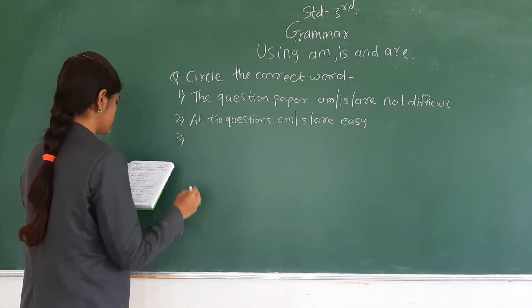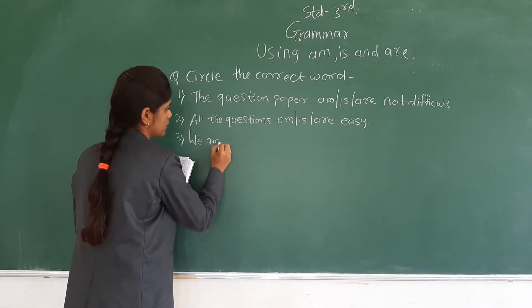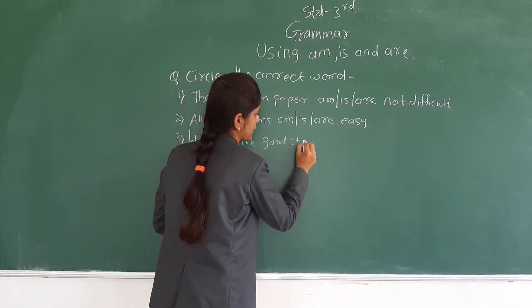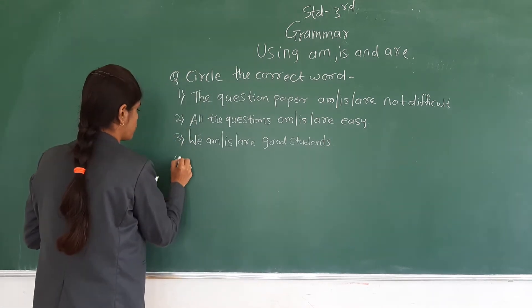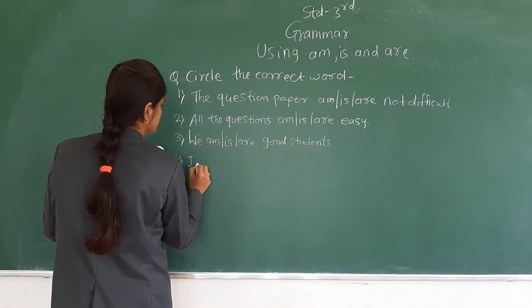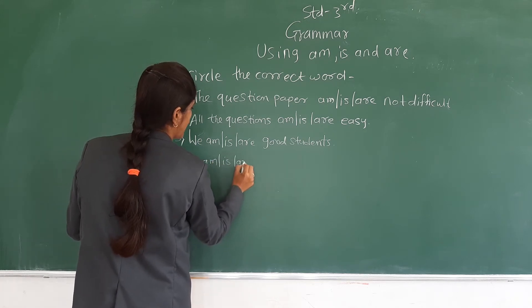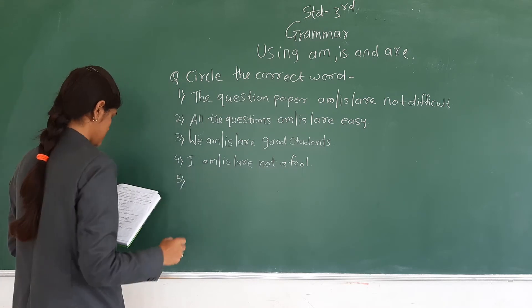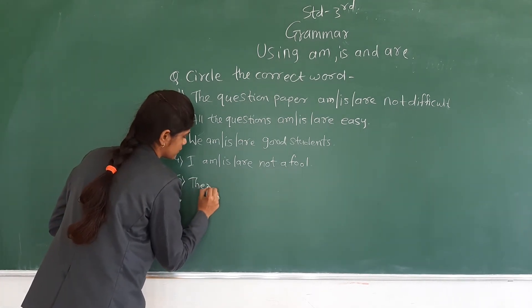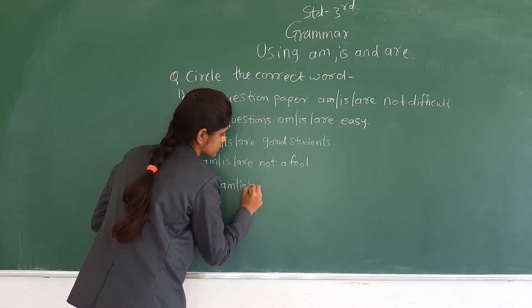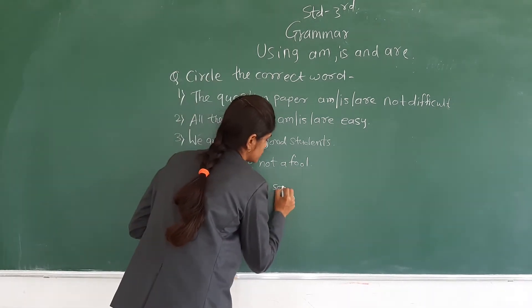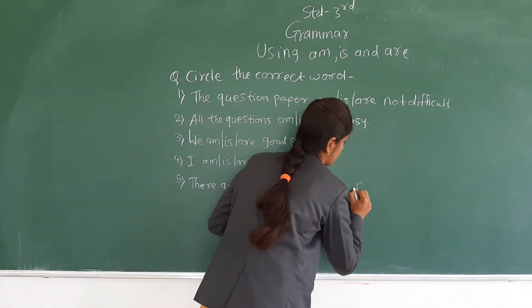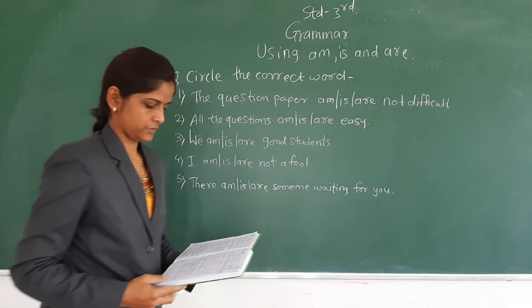The third one is: we — am, is, or are — good students. And for I — am, is, or are — not a fool. Last: there — am, is, or are — someone waiting for you.